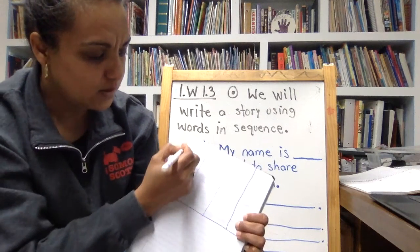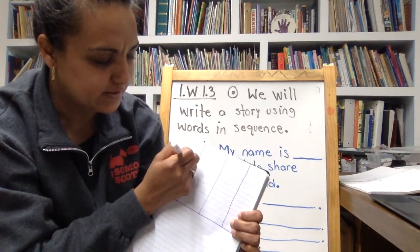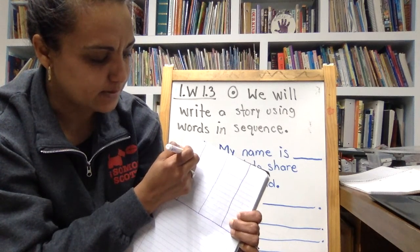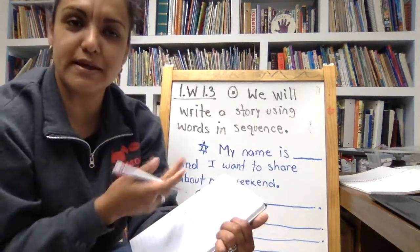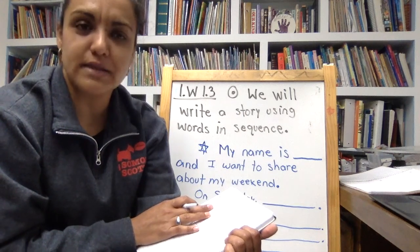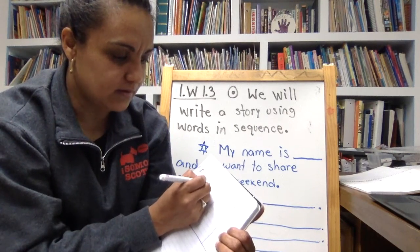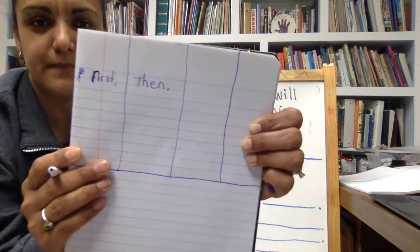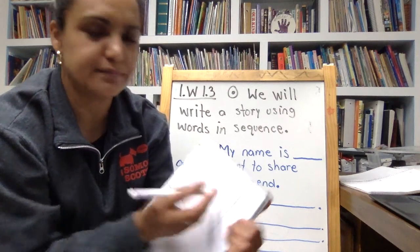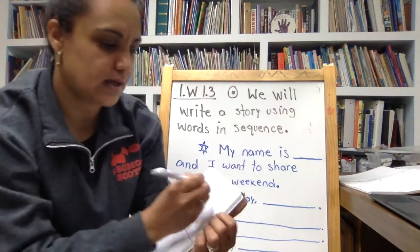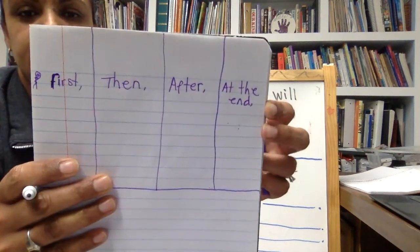Right here I want you to write the word 'First' — with an uppercase letter. Something that you did first, or you can use 'On Saturday' or 'First, on Saturday, I woke up.' Then write 'Then' — that's another sequence word. And 'After' — that's another sequence word. 'At the end' or 'At last' — those are the labels for your four rectangles.